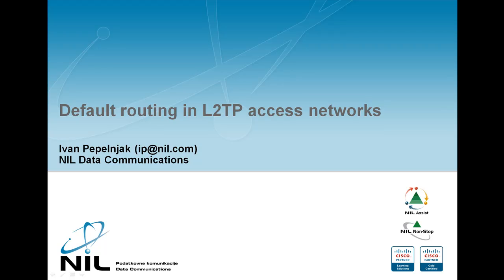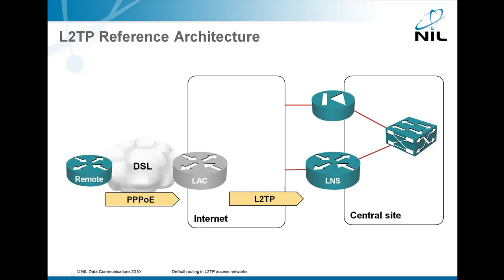In this short example I'll show you how default routing can be problematic in L2TP access networks. Let's start with the reference architecture.